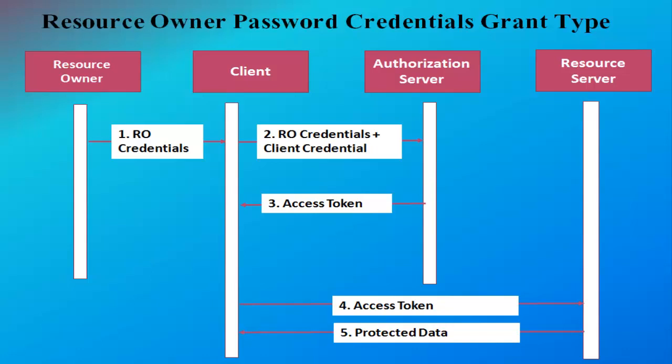Resource owner password credential grant type. The resource owner password credential grant type is appropriate when the client is a trusted first party, capable of collecting the resource owner's user ID and password both on the web and in native device applications. Here the flow is also simple: the resource owner supplies his or her credentials to the client. The client then asks for an access token by sending the resource owner credentials along with the client credentials to the authorization server. The authorization server validates both sets of credentials and provides an access token, which is then given to the resource server to validate and return the protected data.